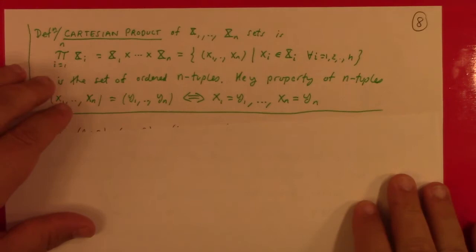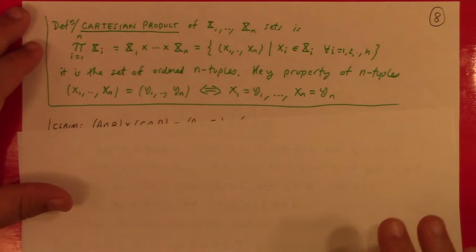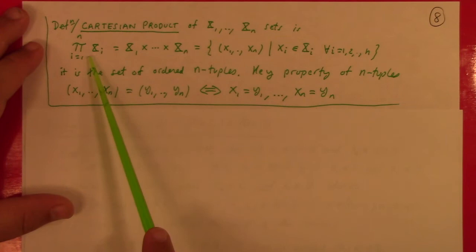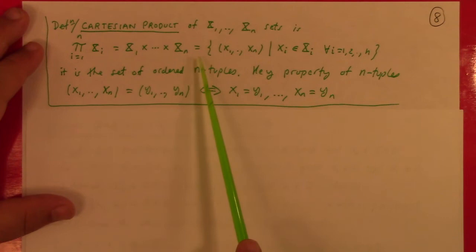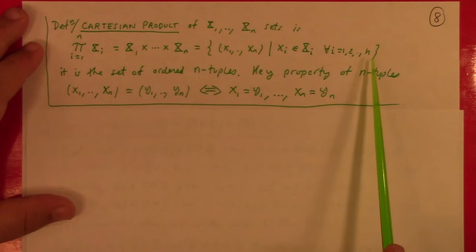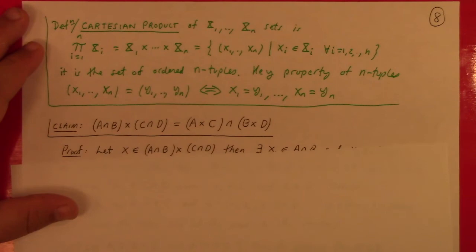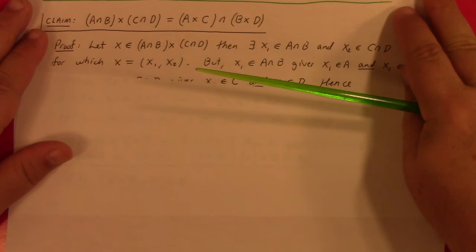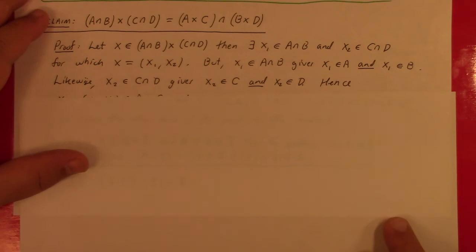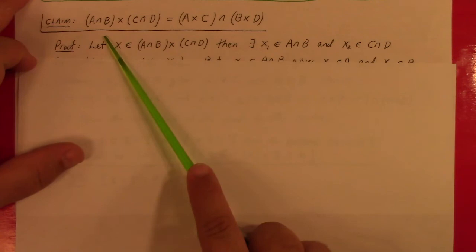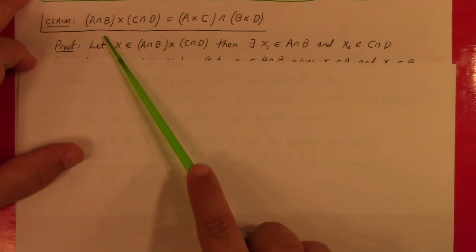One last thing about set theory: Cartesian products. The product ∏(i=1 to n) Xᵢ = X₁ × ⋯ × Xₙ is a set of n-tuples where each component is in Xᵢ for i = 1 to n. The key property: two n-tuples are equal if and only if each component matches. This is a good source of less familiar examples. Claim: (A ∩ B) × (C ∩ D) = (A × C) ∩ (B × D).